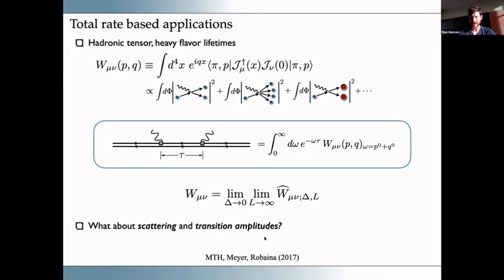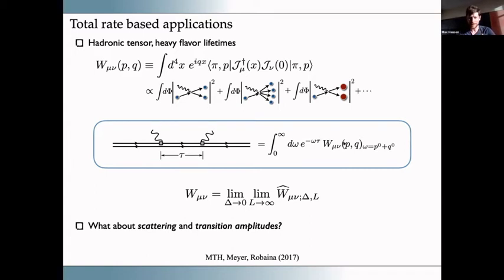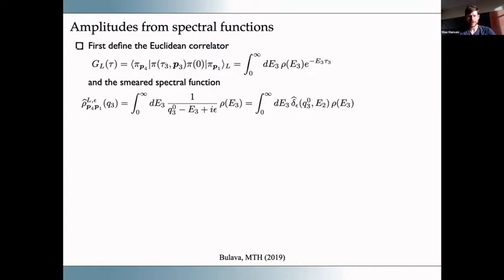At the time of the earlier work I had the sense these methods were well suited for rates but not for amplitudes. One naive concern was that rates are manifestly real and positive definite, whereas a scattering amplitude is complex-valued, with that complexity reflecting unitarity constraints. I couldn't see how that would come out. This segues into more recent work with Jambulava, where we figured out how this can also work — you can get not only inclusive rates but also exclusive amplitudes.